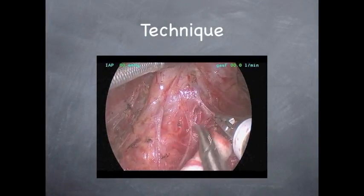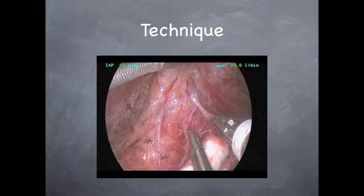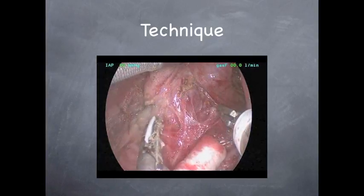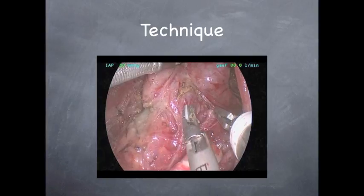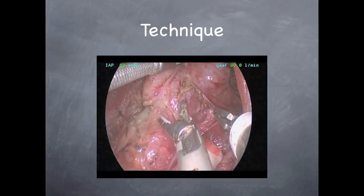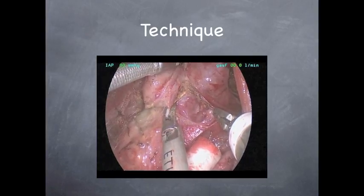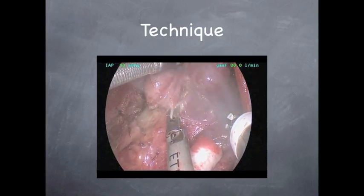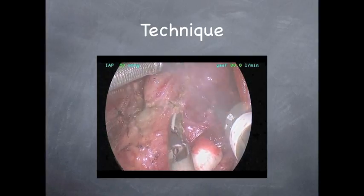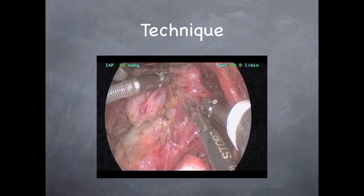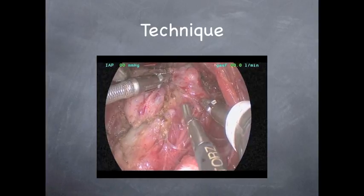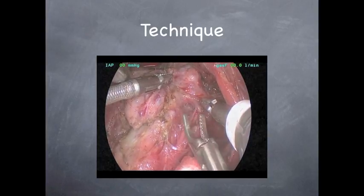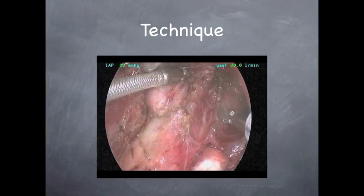This short video clip shows you the view that the surgeon sees during the operation. The thyroid gland is located at the top of the screen. This instrument is called the harmonic scalpel and is being used to divide and coagulate tissue. Here, the thyroid gland is being mobilized from the trachea. The recurrent laryngeal nerve, or the nerve to the vocal cord, is being dissected from the thyroid gland. You can hopefully appreciate the magnified view that is offered to the surgical team, and this assists the surgeon in identifying and preserving the pertinent anatomy.